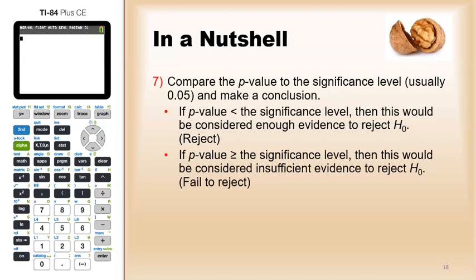If the p-value is greater than or equal to the significance level, then this would be considered insufficient evidence to go with the alternative. That is, if the p-value is greater than or equal to 0.05, then random chance makes the null hypothesis plausible.